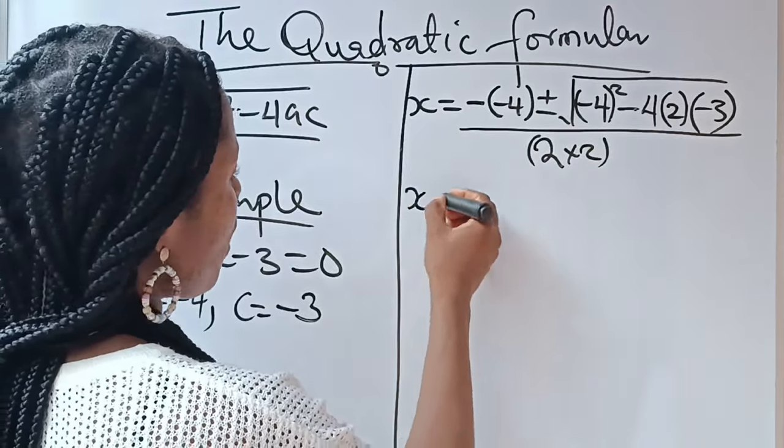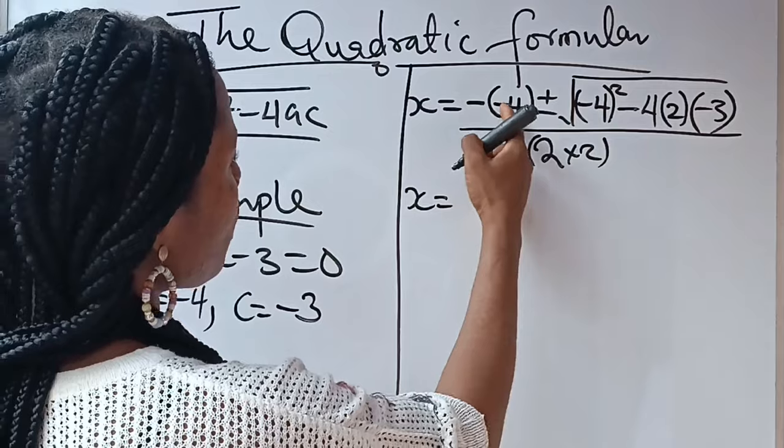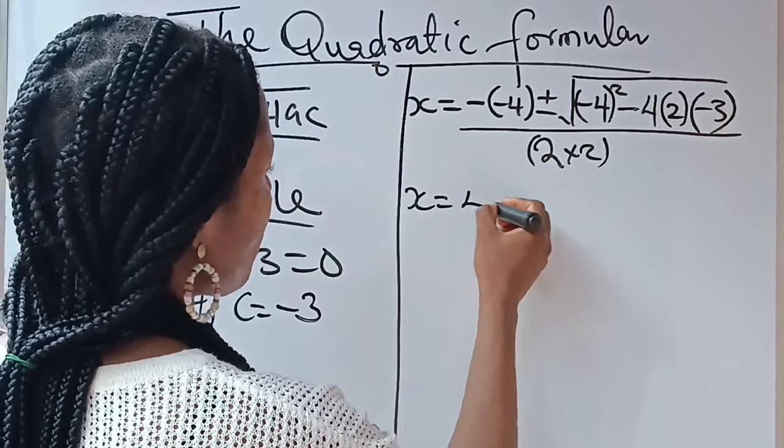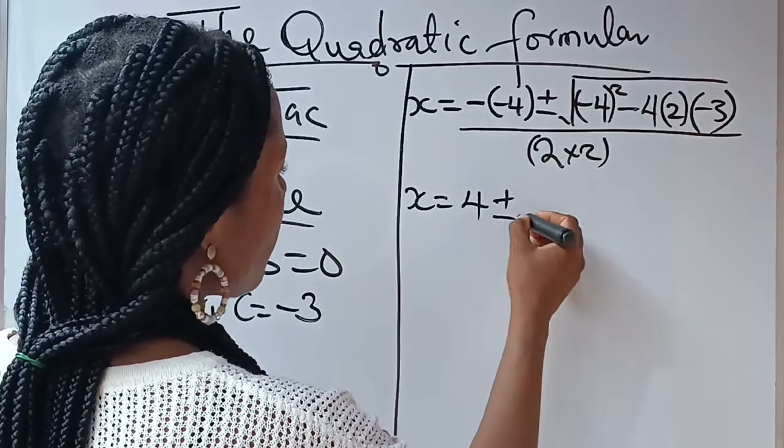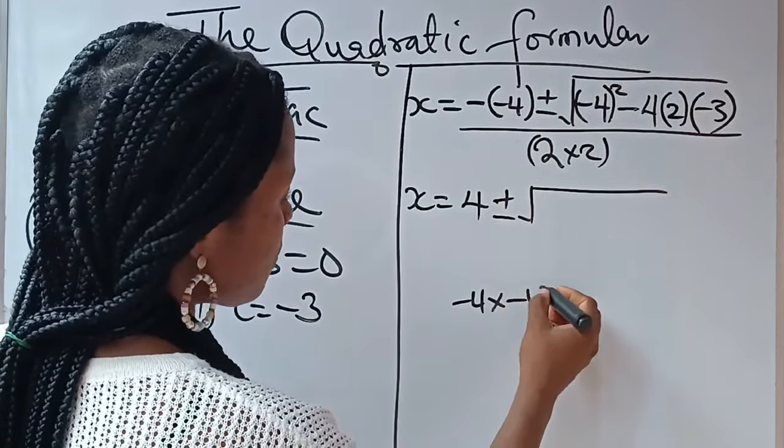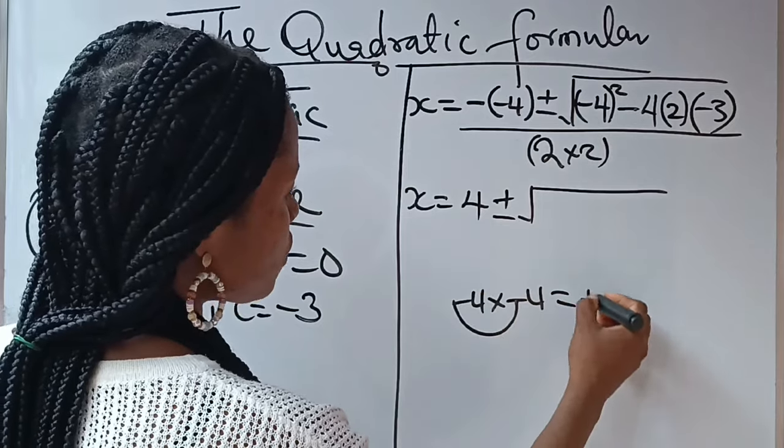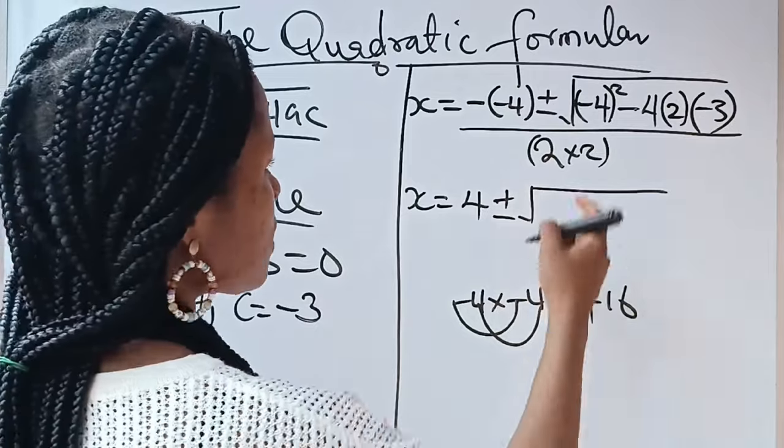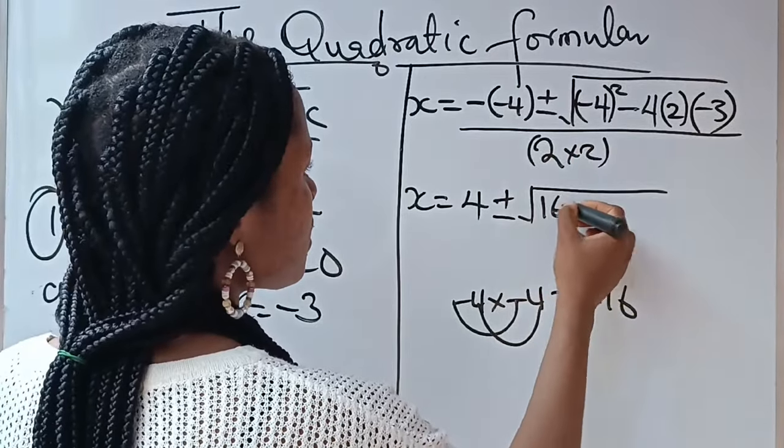Now, we go ahead and solve. Our x now is equal to, minus times minus is going to give us plus. So, we end up having 4 here. Plus or minus square root of, now, -4² means -4 × -4. Minus times minus will give you plus. 4 × 4 will give you 16. So, you notice that this becomes 16.